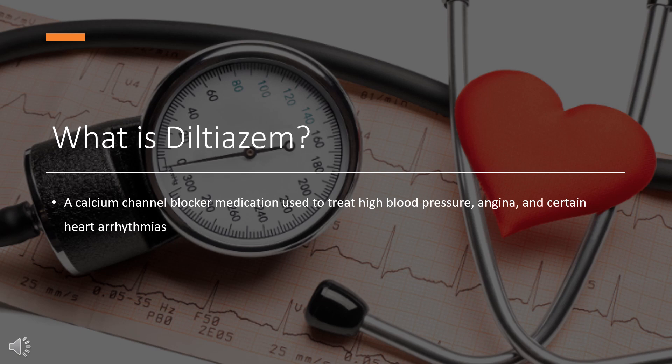Diltiazem works by relaxing the smooth muscle in the walls of arteries, resulting in them opening and allowing blood to flow more easily. Diltiazem was approved for medical use in the United States in 1982. It is available as a generic medication. In 2020, it was the 76th most commonly prescribed medication in the United States, with more than 9 million prescriptions. An extended release formulation is also available.